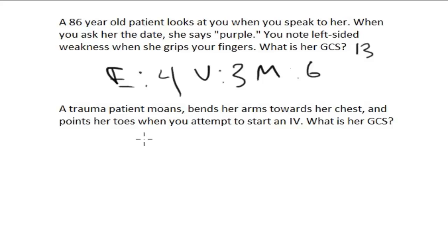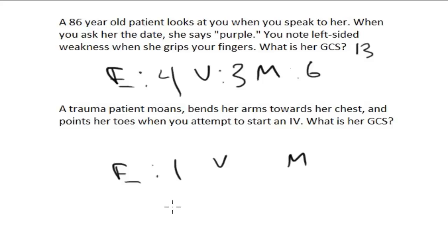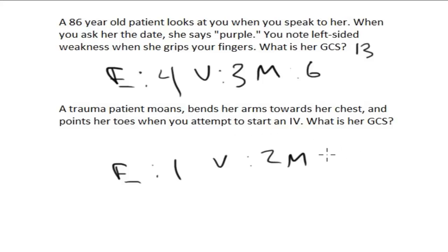Second question: a trauma patient moans, bends her arms towards her chest, and points her toes when you attempt to start an IV. What is her GCS? We're not given any information about eyes, so that is no response — one point. The patient moans when you attempt to start an IV, so that is an unintelligible or incomprehensible response — two points. She bends her arms towards her chest and points her toes — that is a decorticate response, worth three points — for a total GCS of six, reported as E1, V2, M3.